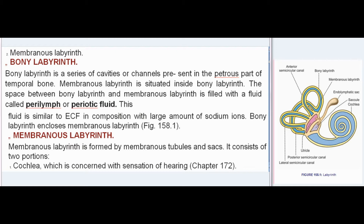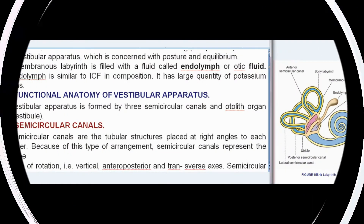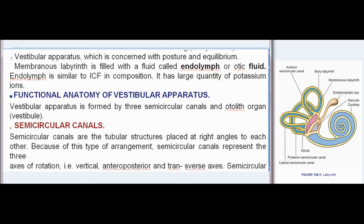The membranous labyrinth is formed by membranous tubules and sacs. It consists of two portions: the cochlea, which is concerned with sensation of hearing (Chapter 172), and the vestibular apparatus, which is concerned with posture and equilibrium. The membranous labyrinth is filled with a fluid called endolymph, or otic fluid.